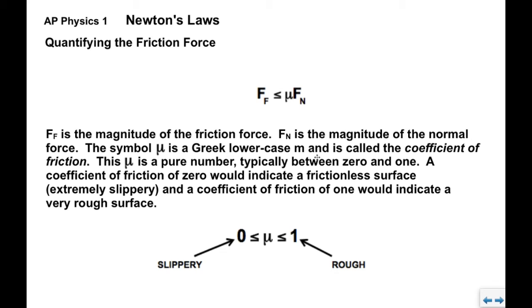So in the formula, FF is the magnitude of the friction force. FN is the normal force. We're familiar with that already. The symbol mu here is a Greek lowercase m. It's also called the coefficient of friction. This mu is a pure number. It has no units at all.